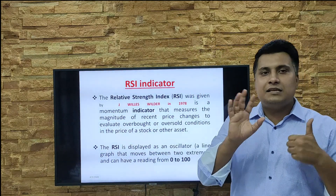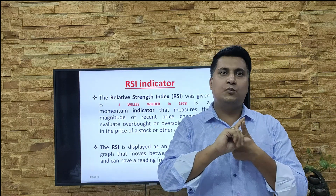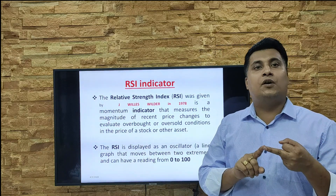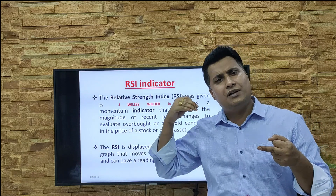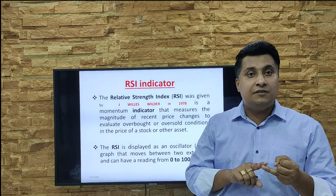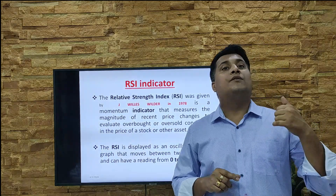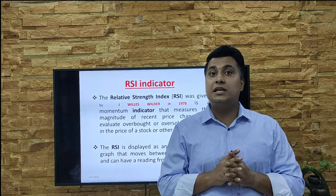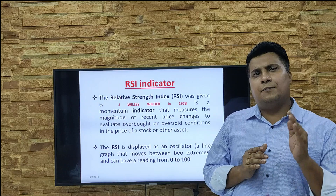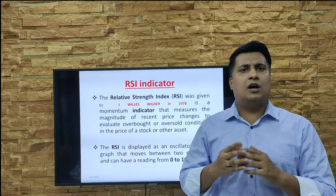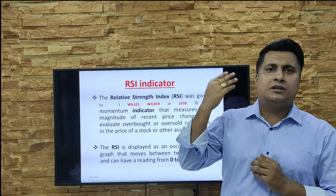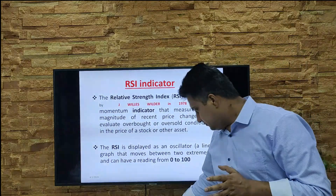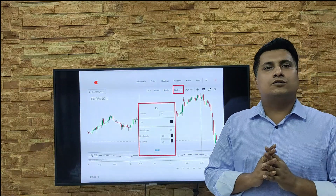RSI is basically a momentum indicator — it gives you details about the momentum in your share. First, it always moves between 0 to 100. Third, it gives you information about the reversal of trend. Fourth, it gives information about overbought or oversold. Fifth, it gives information about extremely overbought or oversold. Sixth, it gives information about new momentum — sometimes the market doesn't have enough strength to go upward or downward, and momentum will be zero.